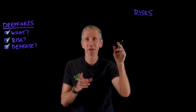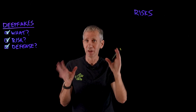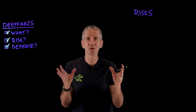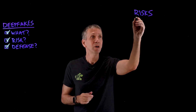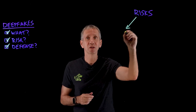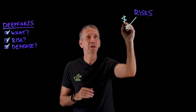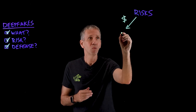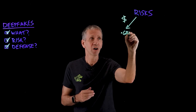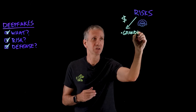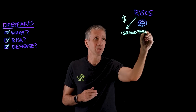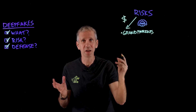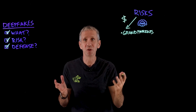Now let's take a look at some of the risks, now that you know how a deepfake can be generated. How could someone use this to do bad things? Well, one type of risk — a financial risk — is fraud. One of these is often referred to as a grandparent scam because grandparents are frequently the targets, although it really could happen to any family member or anyone that you know.